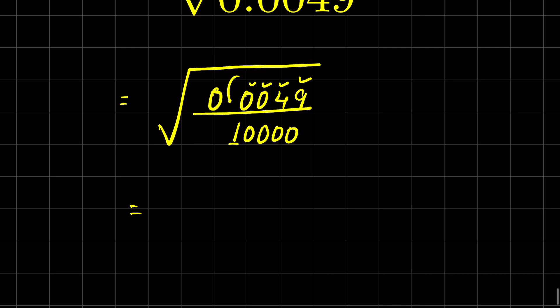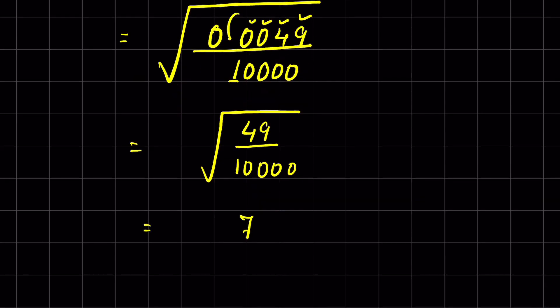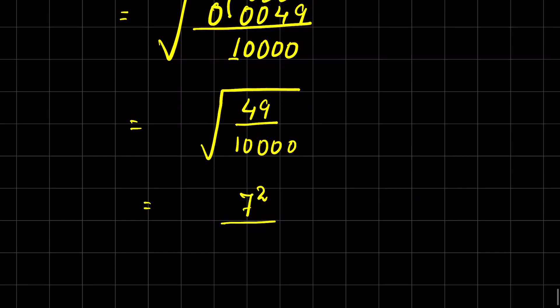Now this is under square root. Now we have 49 upon 10,000 under square root. Now 49 we can write it as 7 squared upon 100 times 100, or we can write it as 100 squared under square root.